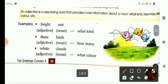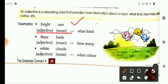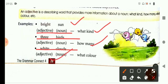Bright sun. Adjective telling about noun sun, of what kind it is. Three birds, telling you about the birds, how many birds. White cloud, again telling you about noun, of what color.